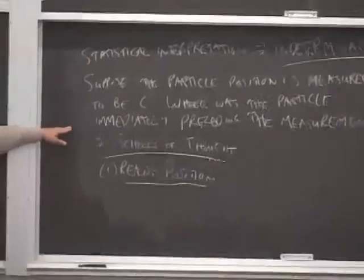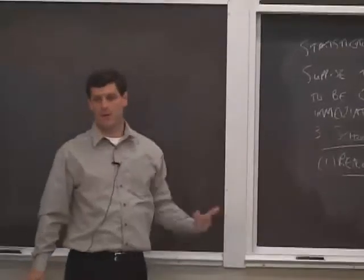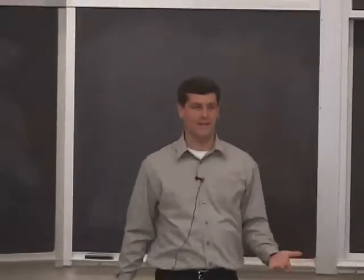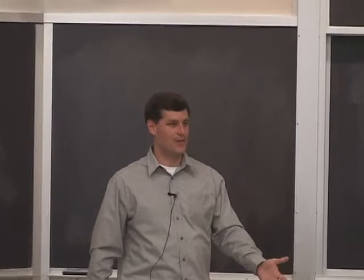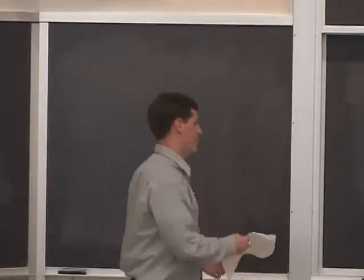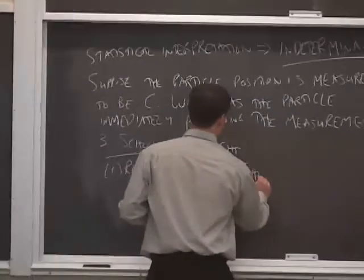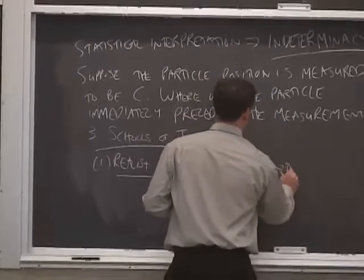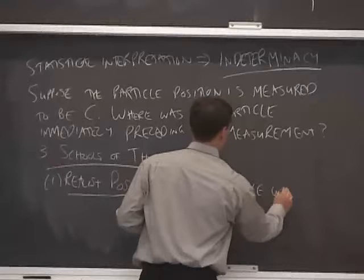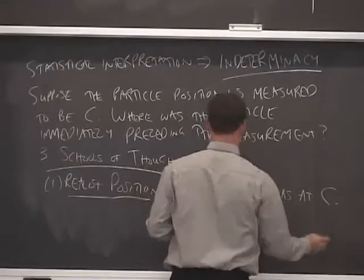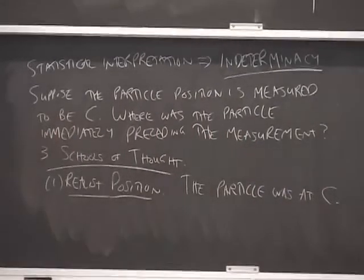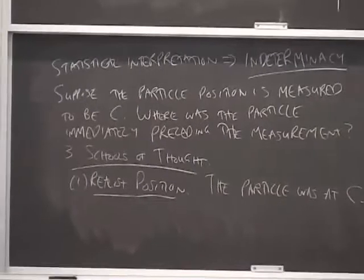The first school of thought is known as the realist position. So the realist, if they were asked, where was the particle immediately preceding the measurement, the realist would say, well, of course the particle was at point C, immediately preceding the measurement. That's where it was. When we measured it, it must have been there right before the measurement. So the realist would answer the particle was at C.